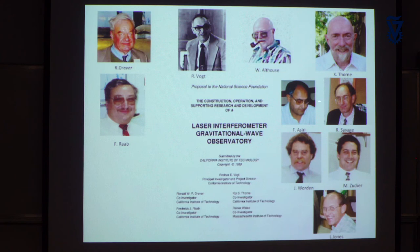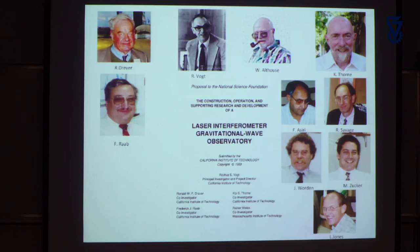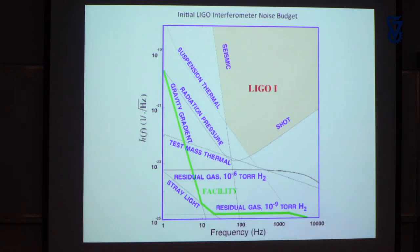Vogt did one other very clever thing: because it was a difficult project, he took an engineer and a scientist and made them work together to build the instrument — not the instrument inside, but the facilities: the vacuum system, the buildings, making sure nothing under your control would compromise the measurement. We benefited enormously from that.